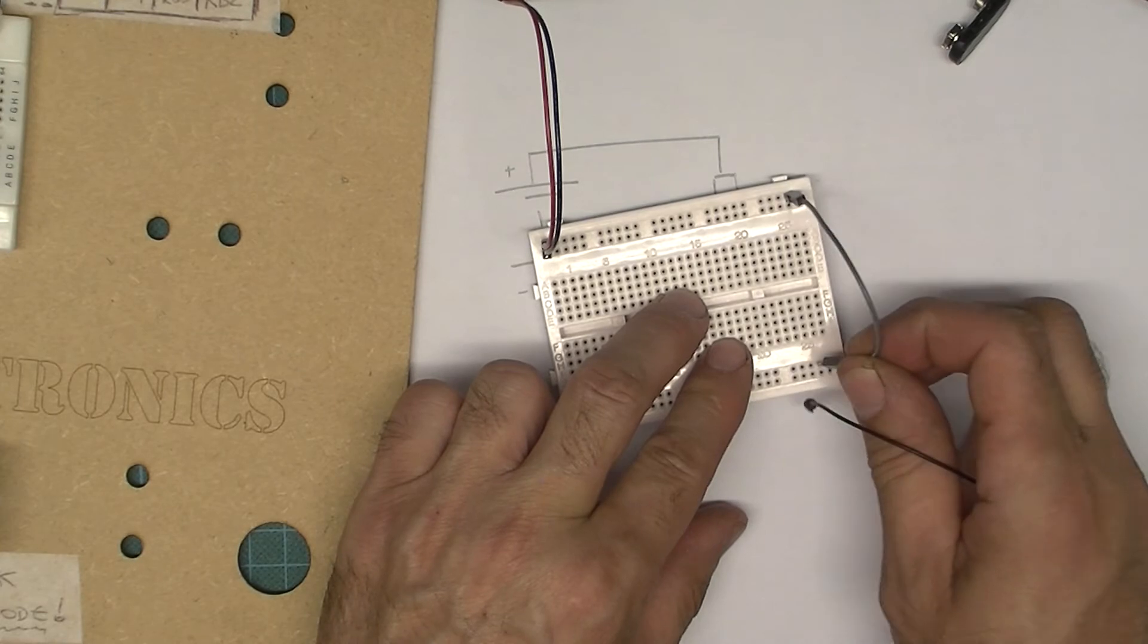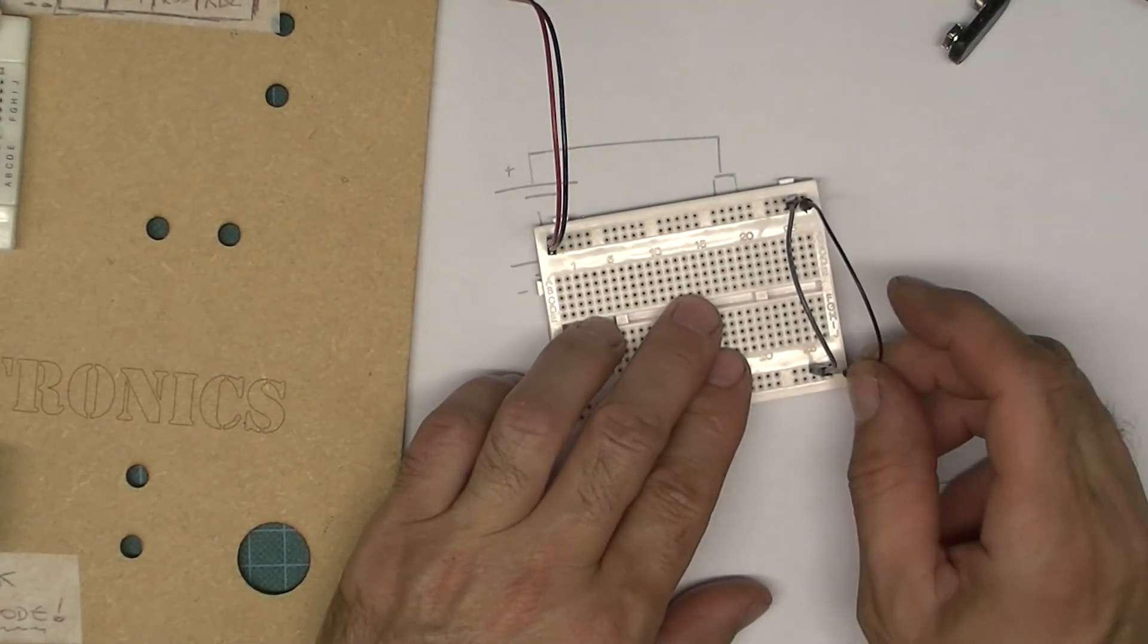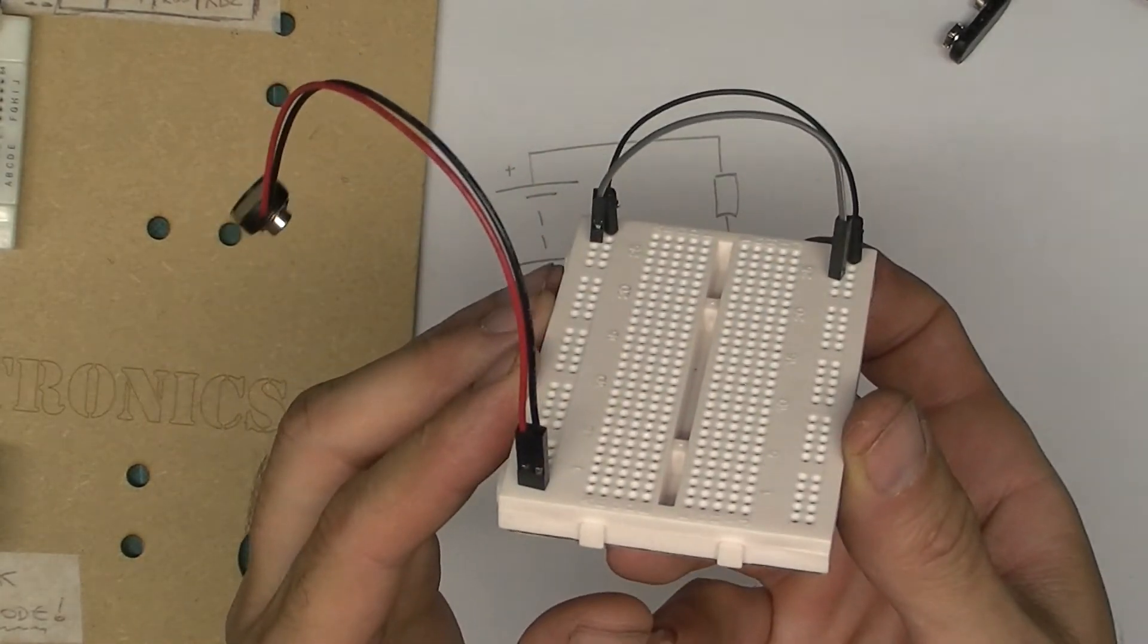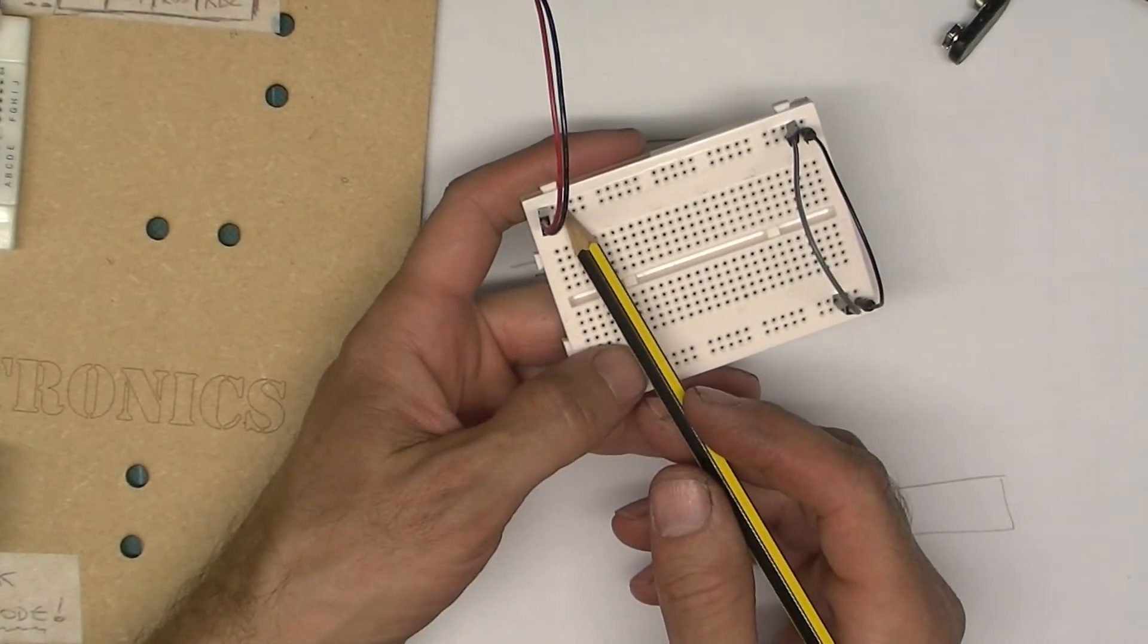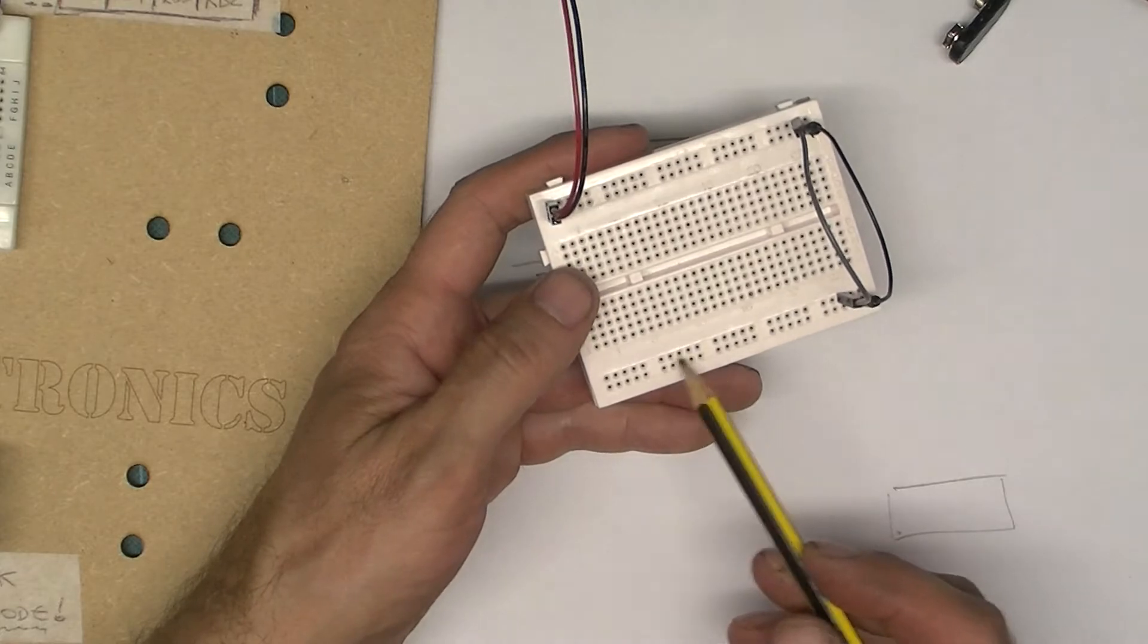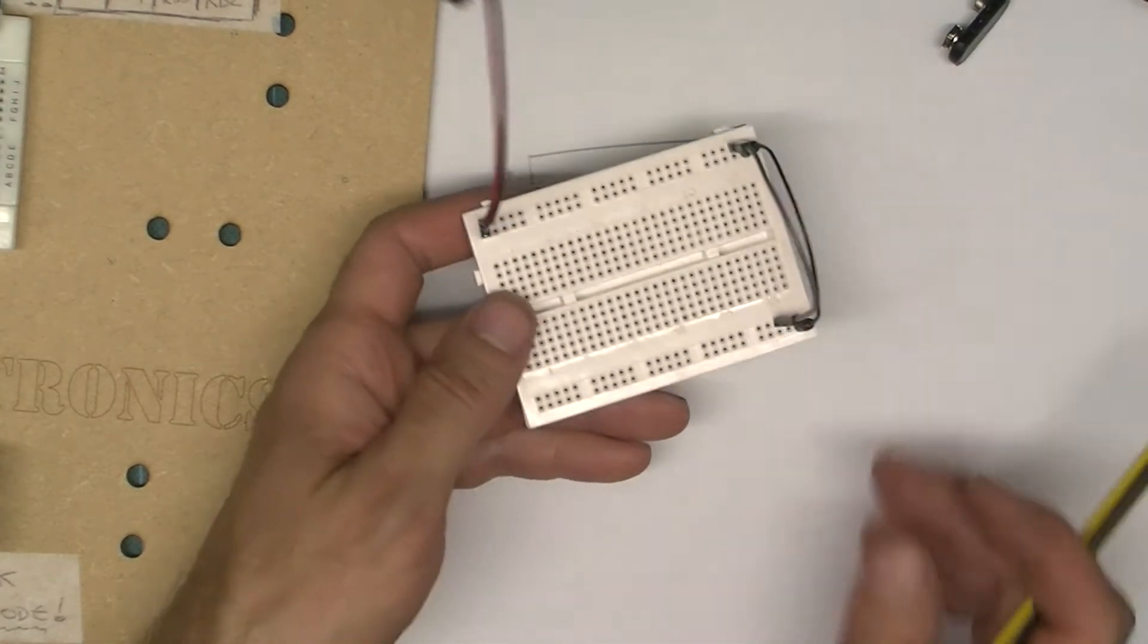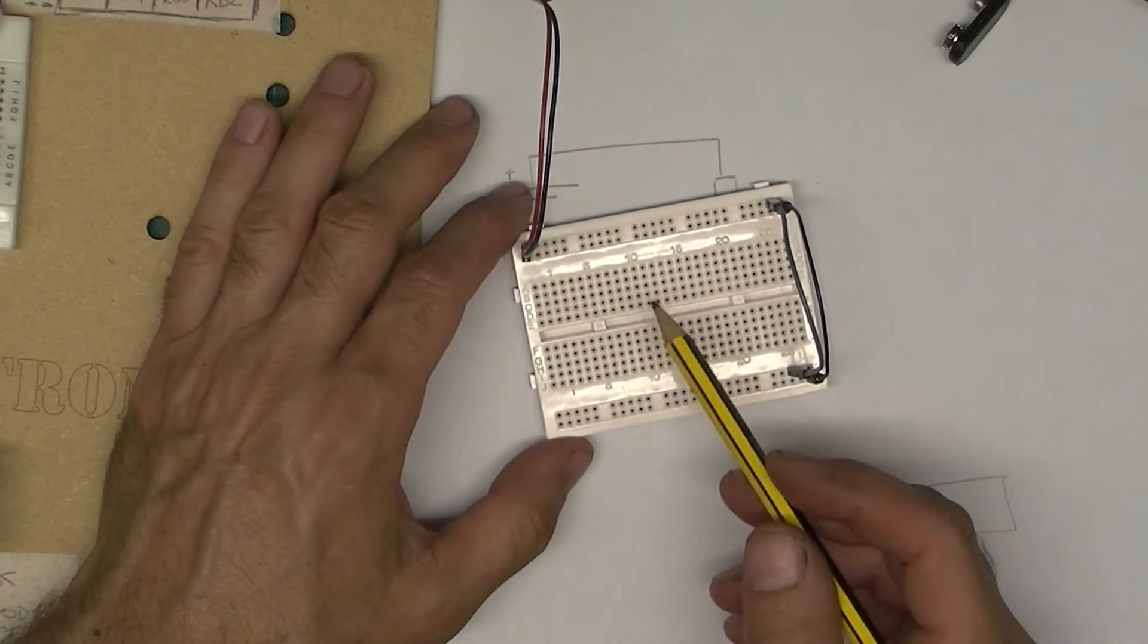Hopefully that makes some sort of sense. Now I've got top one is the positive supply and then zero volts, and then it's positive supply and then zero volts. I've just duplicated it—that's really convenient.